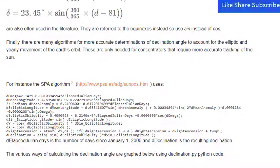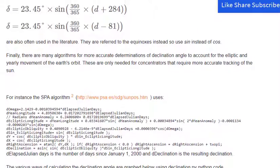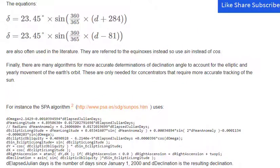Finally, there are many algorithms for more accurate determinations of declination angle to account for the elliptic and yearly movement of the Earth's orbit. These are only needed for concentrator systems that require more accurate tracking of the sun.